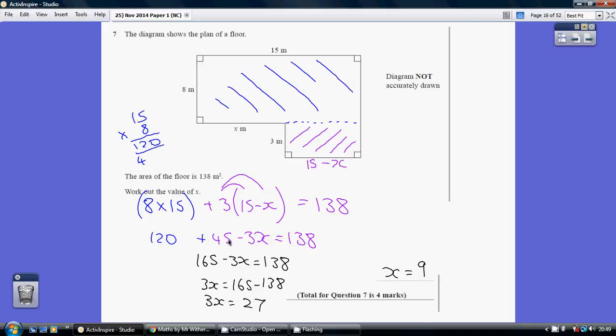120 add 45 is 165, so 165 minus 3x equals 138. Adding 3x to both sides and taking away 138 from both sides, we get 3x equaling 165 minus 138, which is 27, and 3 nines of 27. So x equals 9.